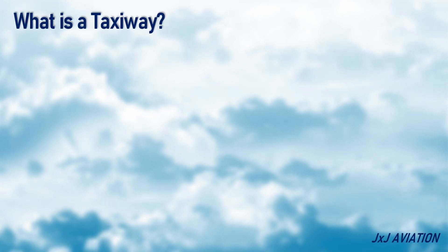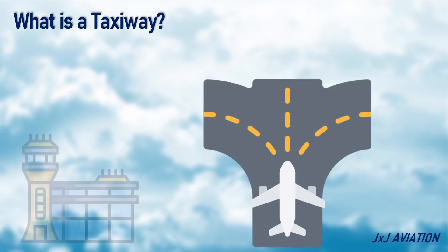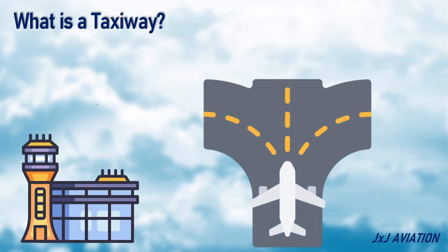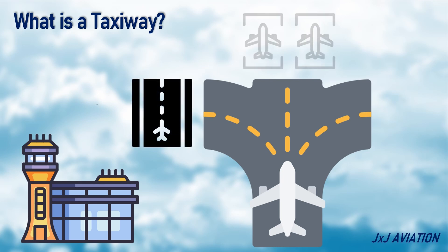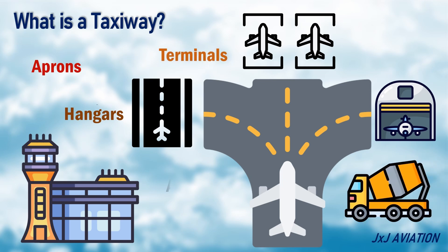First, let's understand what is a taxiway. A taxiway is a path in an airport that is used by an aircraft. This path connects a runway to different areas of an airport, such as aprons, hangers, terminals, or other facilities. In most airports, taxiways are made of asphalt or concrete.